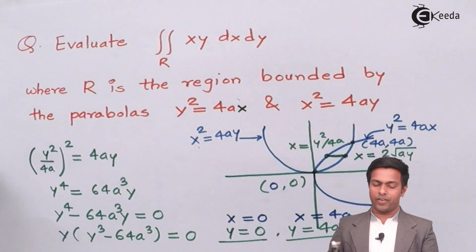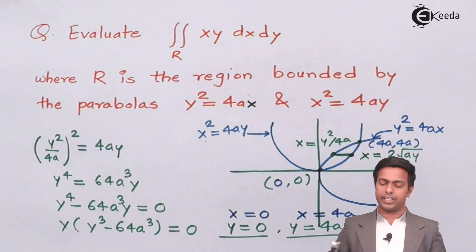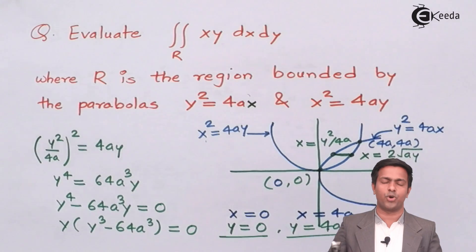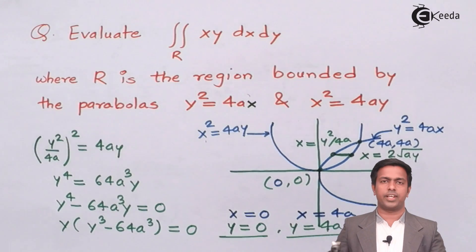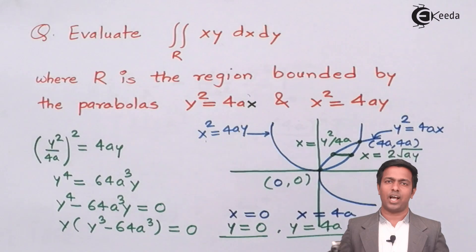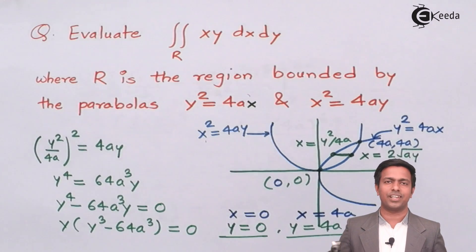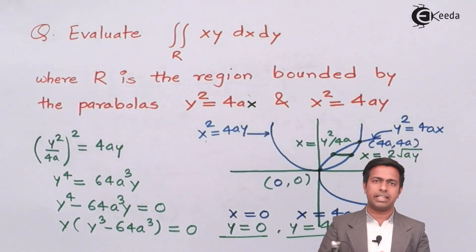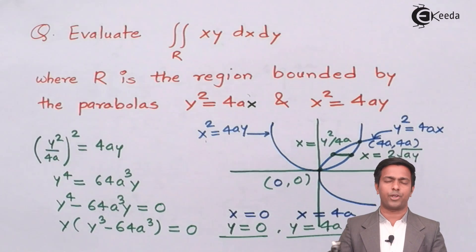Therefore the value of the integral is 64a⁴/3. We have successfully evaluated this double integral over the given region by drawing the curves, finding the limits, and integrating step by step. Thank you for watching.